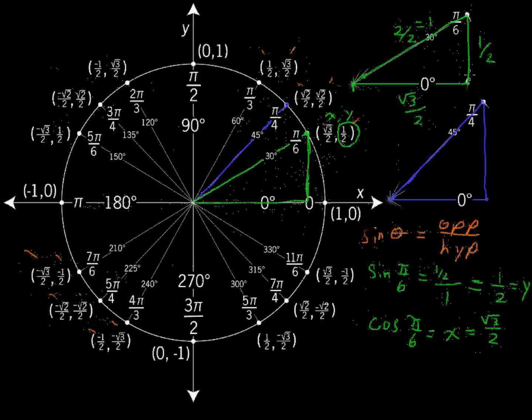And there we have our values. You see 1 half as the y value, and square root of 3 over 2 as the x value. So you've just built those coordinates there.